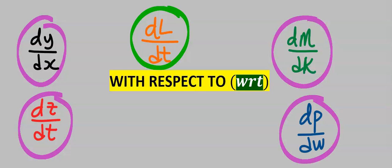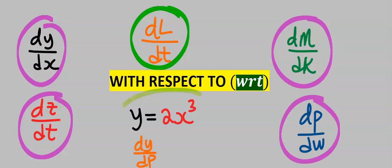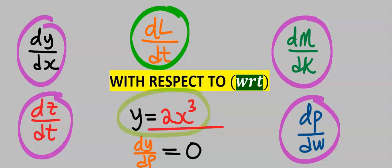That is, if I'm given y = 2x³, to find dy/dp, my answer is zero because there is no p in the function for me to differentiate with respect to.